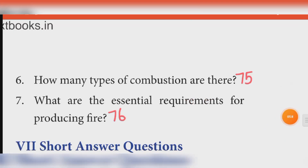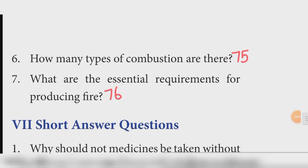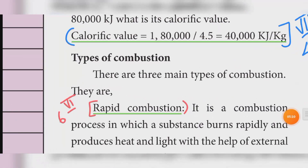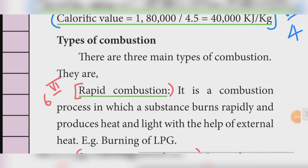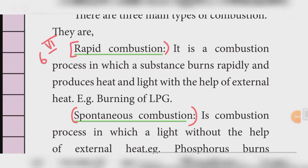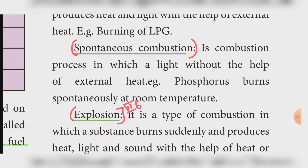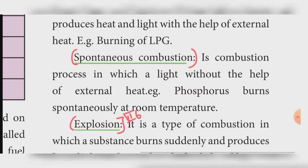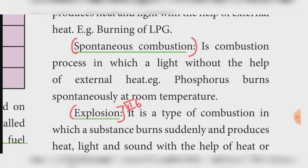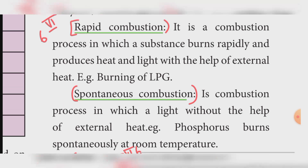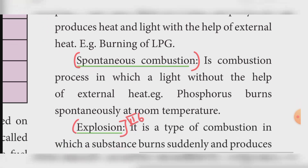Sixth one: how many types of combustion are there? Refer book page number 75. Answer: three types — rapid combustion, spontaneous combustion, and explosion.